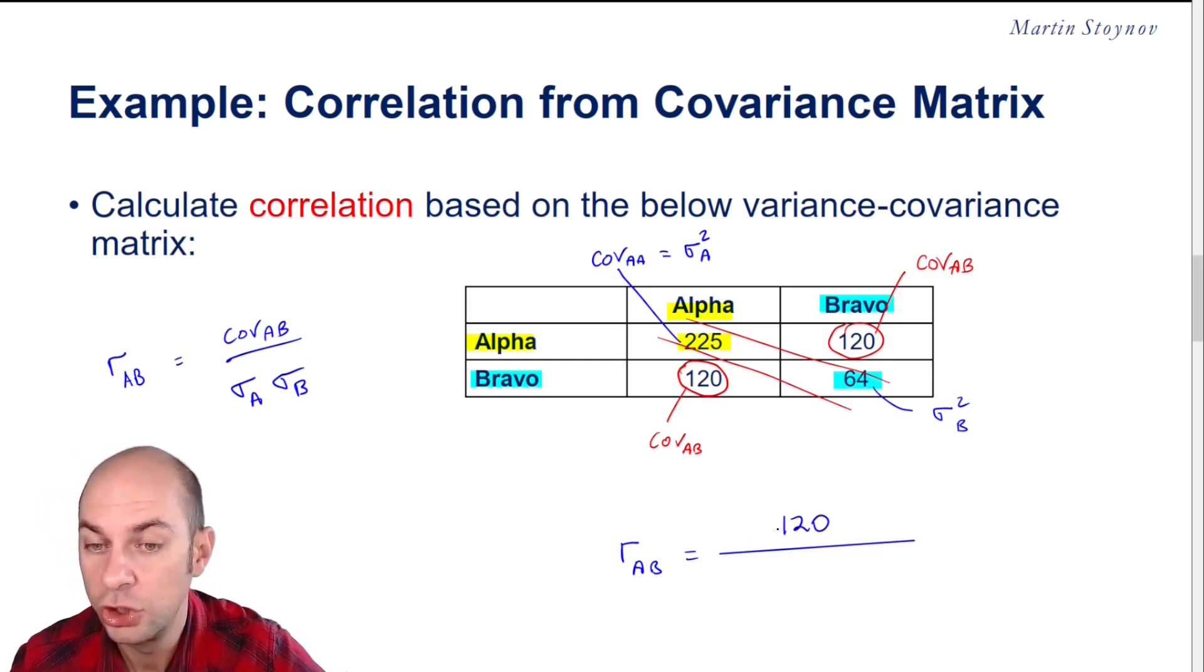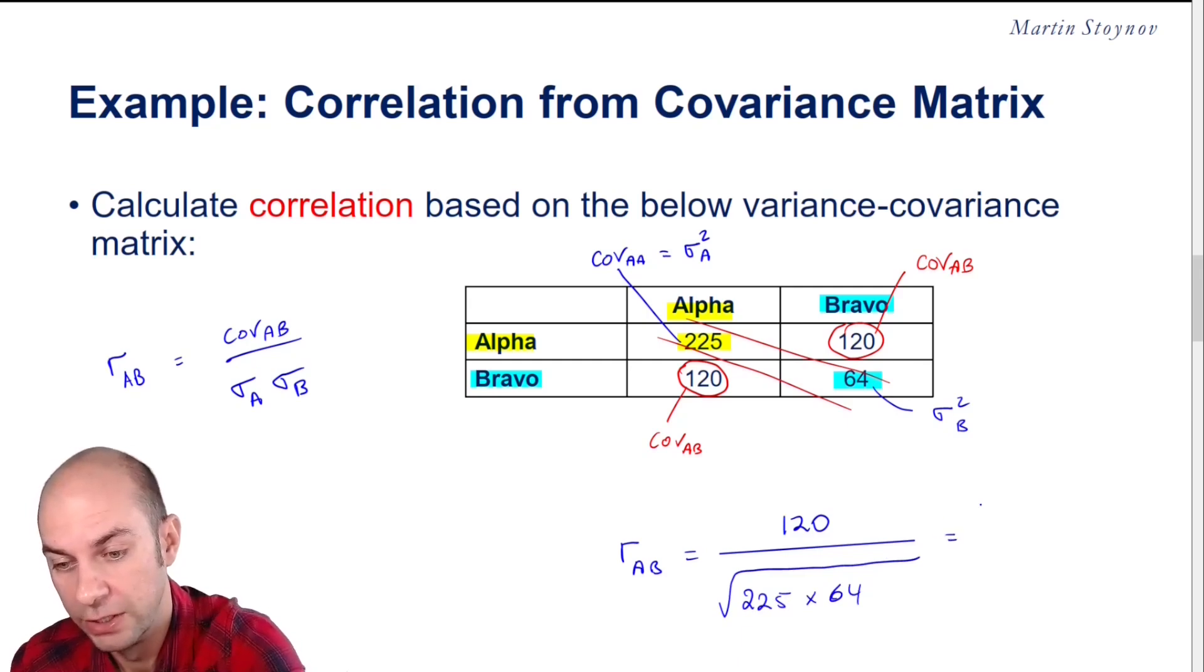The denominator should have the standard deviations rather than the variances. So we need to take a nice big square root here of 225 and 64. So obviously, I'm going to have 120 in the numerator.